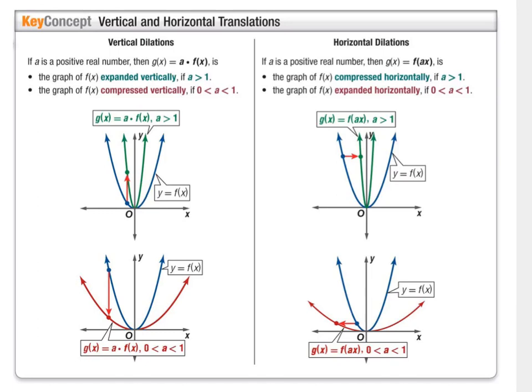Next are dilations, and these can be the trickiest because the pictures look the same. If you're multiplying a number times f(x) — the whole function — and that number is greater than 1, that's a vertical expansion. When the multiplied number is a fraction between 0 and 1, that is a vertical compression. If a number is multiplied times x inside parentheses, and it's greater than 1, that's a horizontal compression. When that number is between 0 and 1, it's a horizontal expansion.